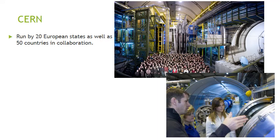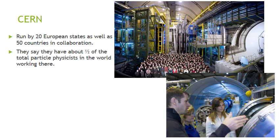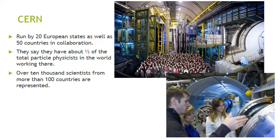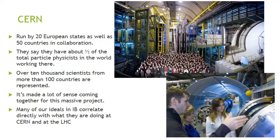CERN is run by 20 European states as well as 50 countries in collaboration. We've talked a lot about the research there at CERN over the years, and now we're diving into some of the things that they're looking at intensely there. They say that about half of the world's total particle physicists are working there, which is pretty incredible — over 10,000 scientists from more than 100 countries. It makes a lot of sense coming together for a massive project like this, and the work they're doing collaborating is much more than could have been done spread out. Many of our ideals in the IB program correlate directly with what they're doing at the Large Hadron Collider at CERN.